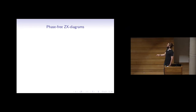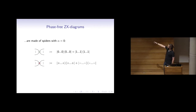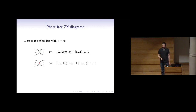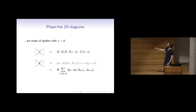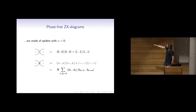One of the simplest fragments is the phase-free fragment. We assume the alpha parameter is zero, which means the e-to-the-i-alpha term becomes one. So these red and green spiders take a very simple form. A useful way to think about them: one is a generalized copier map, or a Kronecker delta between all its wires. The other is a parity map — it sums over all even-parity computational basis states, up to some normalization.